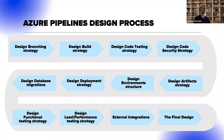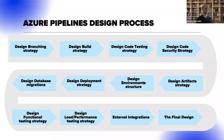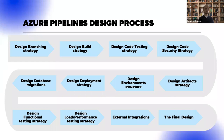We usually start with designing the branching strategy, then the build strategies, then go into code testing, code security, the artifact strategy, and environment structure. From there we go into deployment strategy, database migration, functional testing, load and performance testing, external integrations, and finally validate the final design of pipelines.